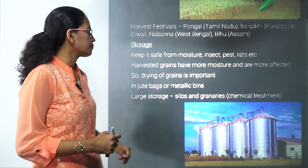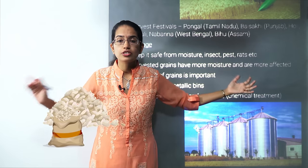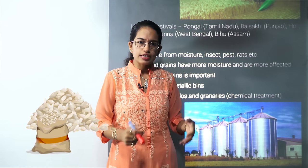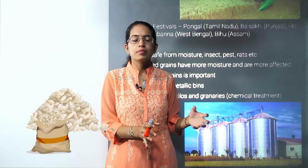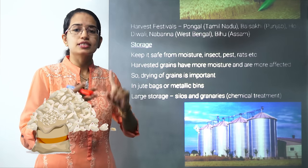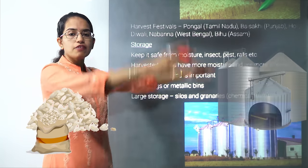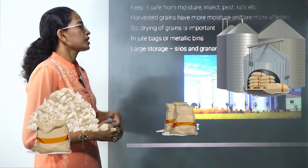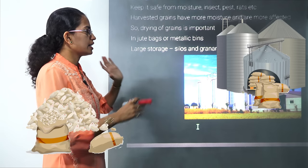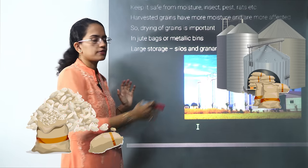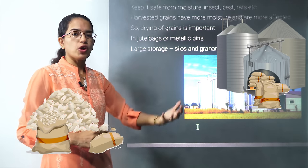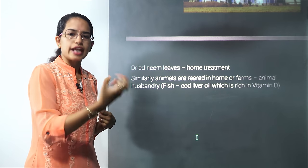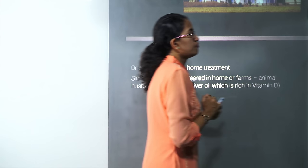After harvesting, the crop needs to be stored to last throughout the year until the next harvest. It must be protected from moisture, insects, pests, and rats. Large grain silos are used for storage. Techniques include irradiation, jute bags, metallic bins, and chemical treatment in large granaries. At home, dried neem leaves are a good substitute for preserving grain.